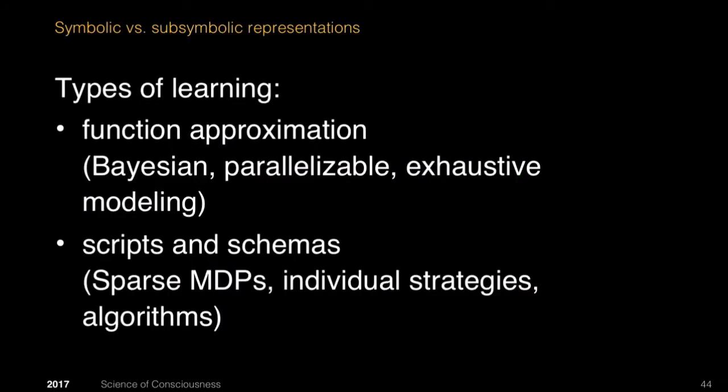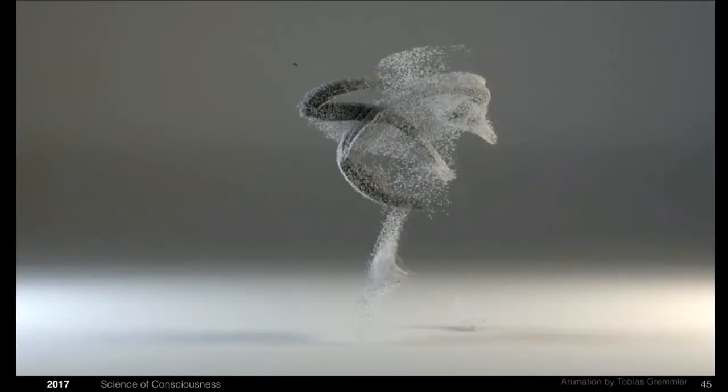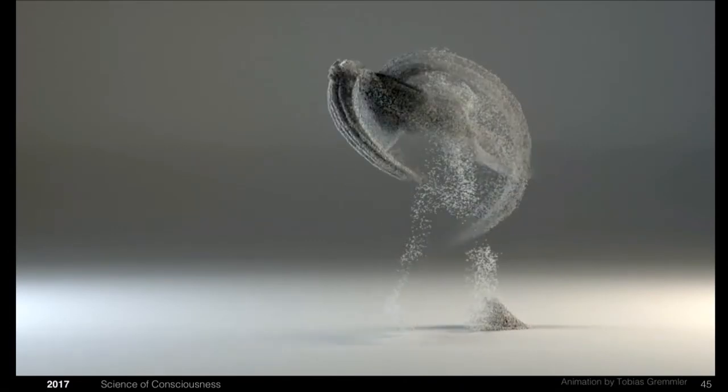For this, we need different types of learning. One is function approximation, which is Bayesian, which is parallelizable and exhaustive. So we use this, for instance, to learn the laws of perspective in the first months of our life. Then we have scripts and schemas, which are narratives, stories that we use to describe what happens in a restaurant or what happens in the financial markets or in society or in politics. This is largely what we are talking to each other about. We can use these conjunctions of those to direct our mental simulations.